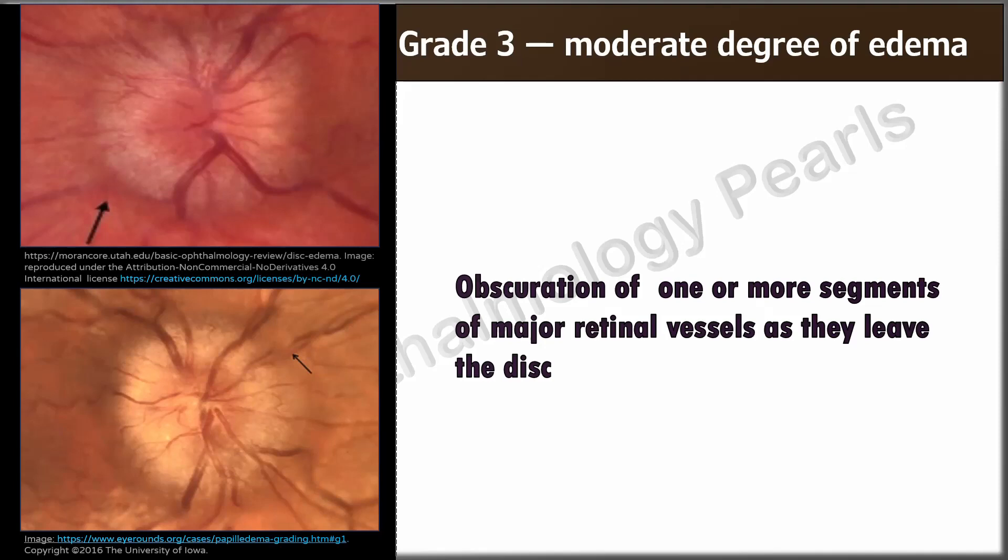In grade 3, all the borders are elevated and they obscure one or more segments of the major retinal vessels as they leave the disc. The central portion of these vessels is, however, clearly seen. The disc diameter appears increased and the halo surrounding the disc has an irregular fringe.